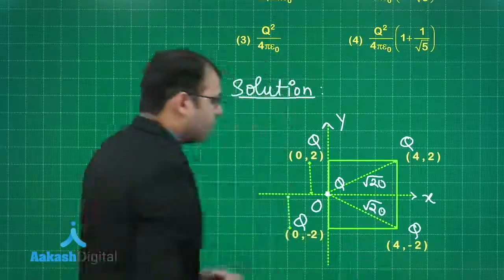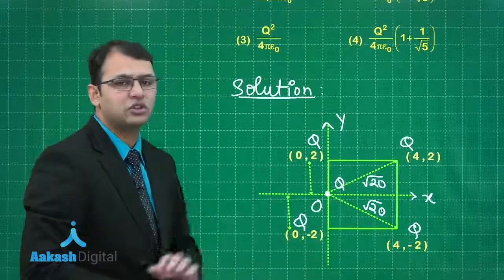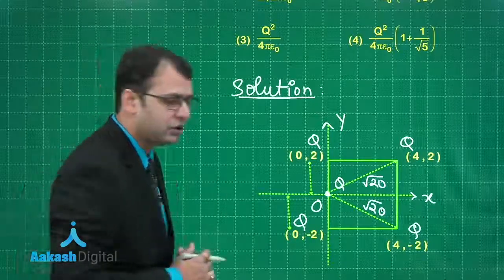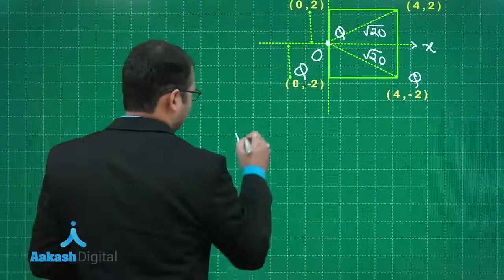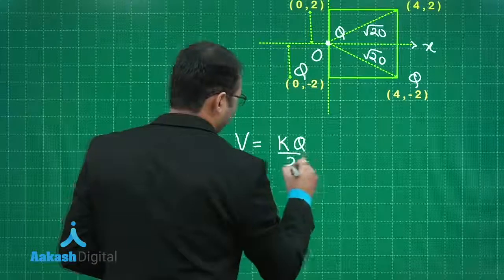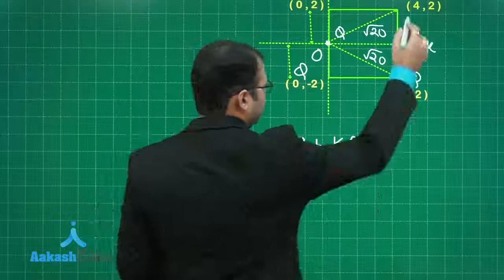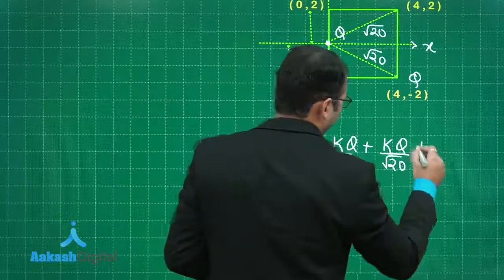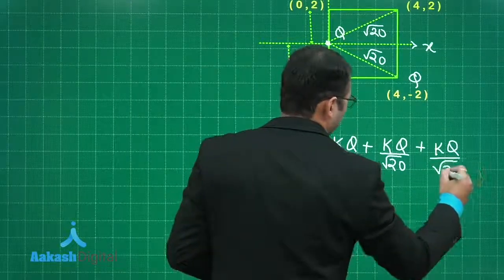We have 4 charges which will add their potential here. Since they are all positive charges, the potential will be added simply as potential is a scalar quantity. Potential by first charge would be KQ by 2, plus by this charge would be KQ by 2, by this charge would be KQ upon root 20, plus potential by this would be KQ by root 20.